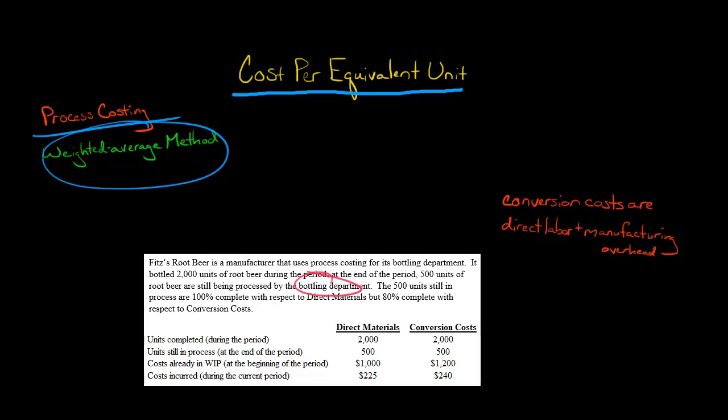There's 500 units that are 100% complete with respect to direct materials, but they're only 80% complete with respect to conversion costs.